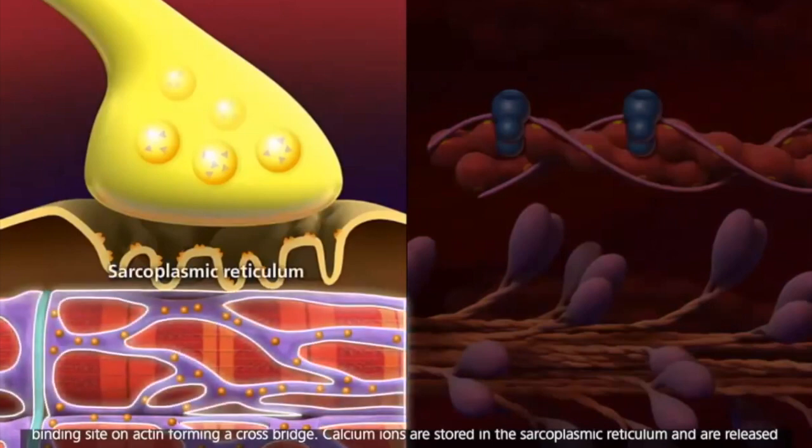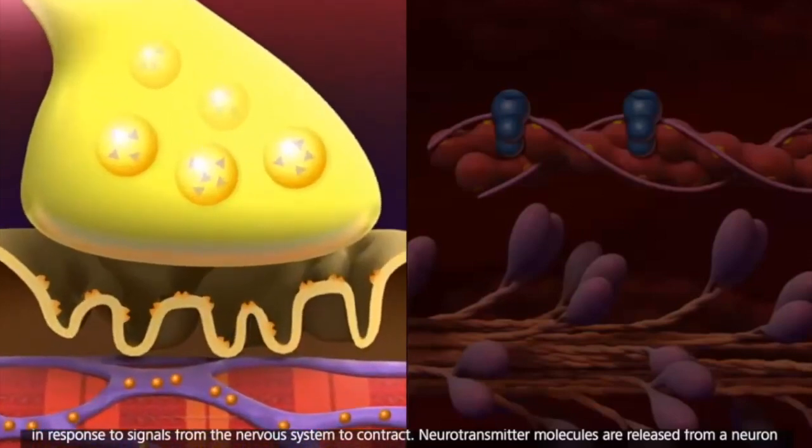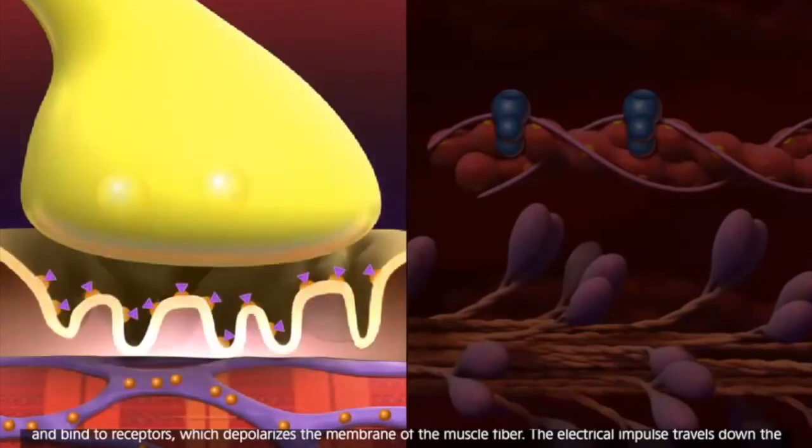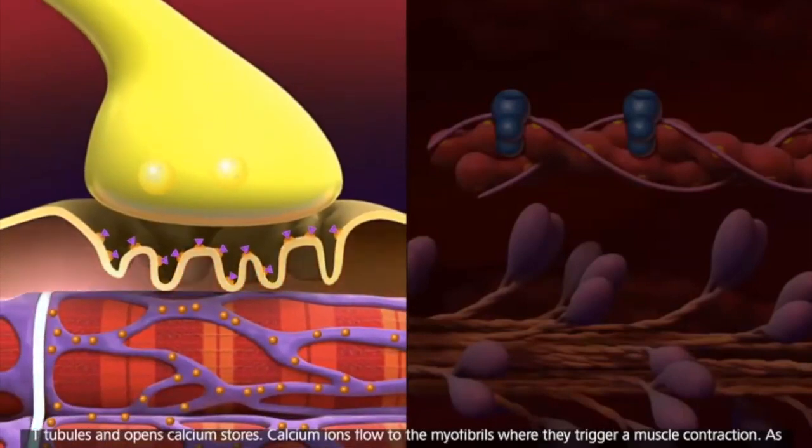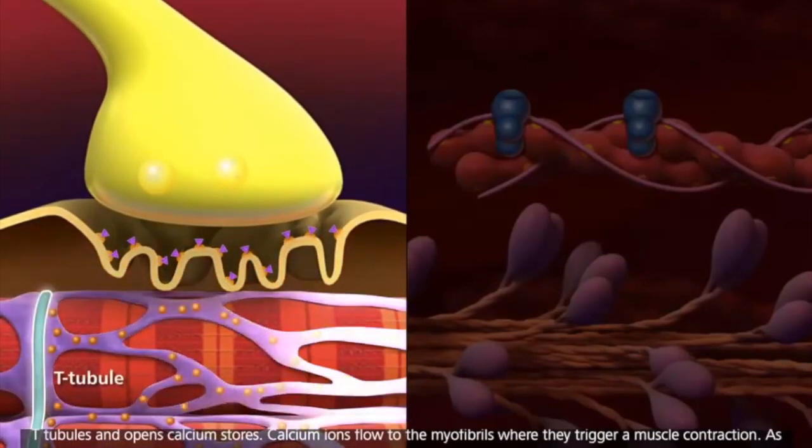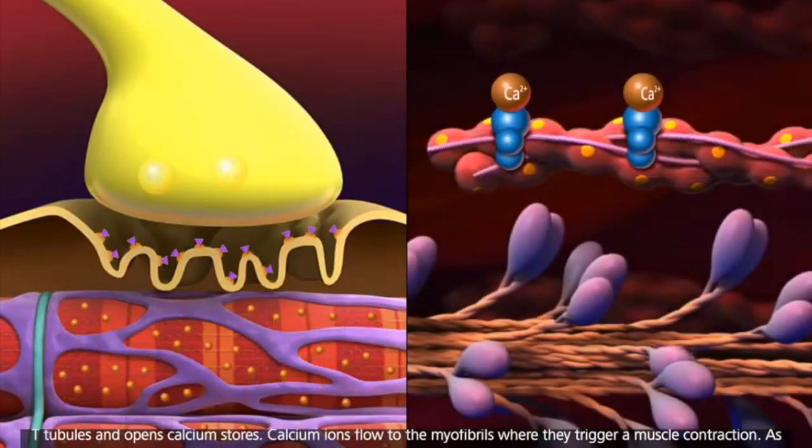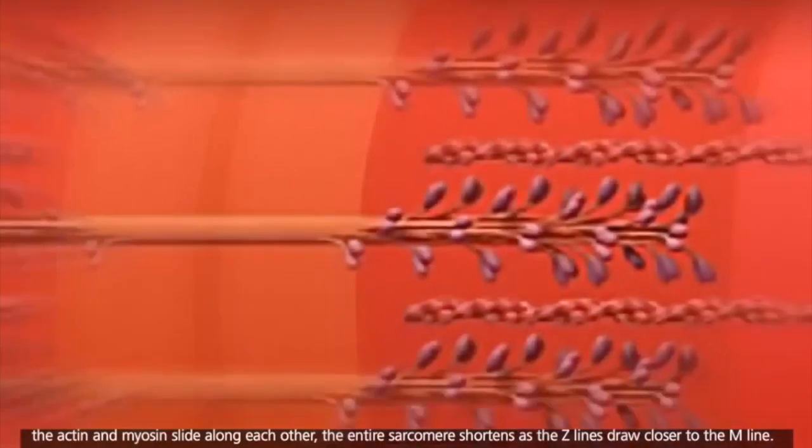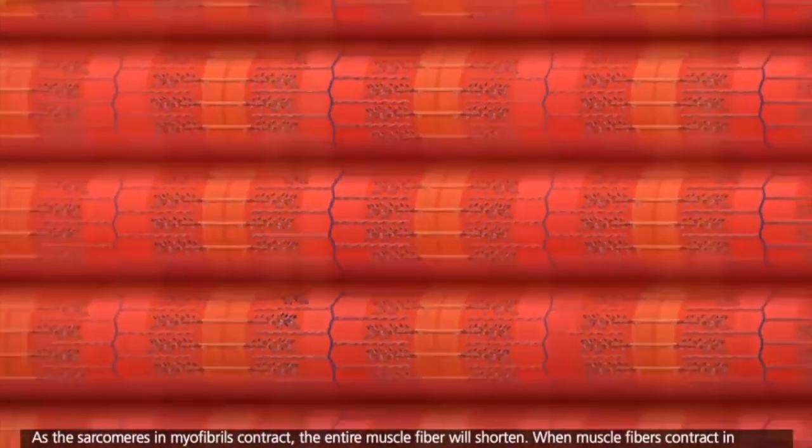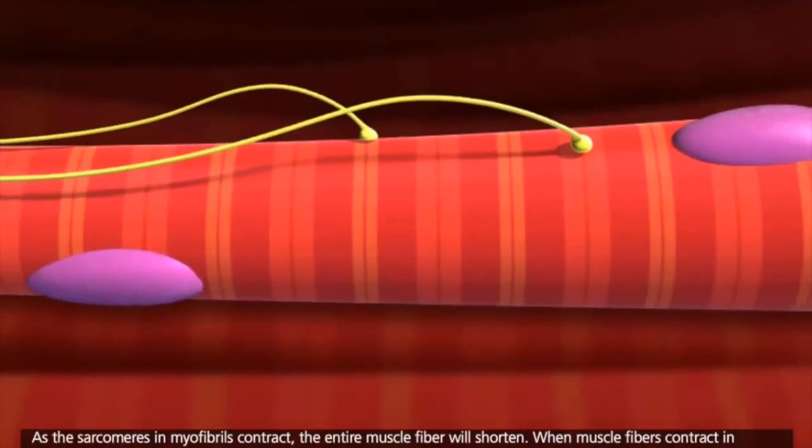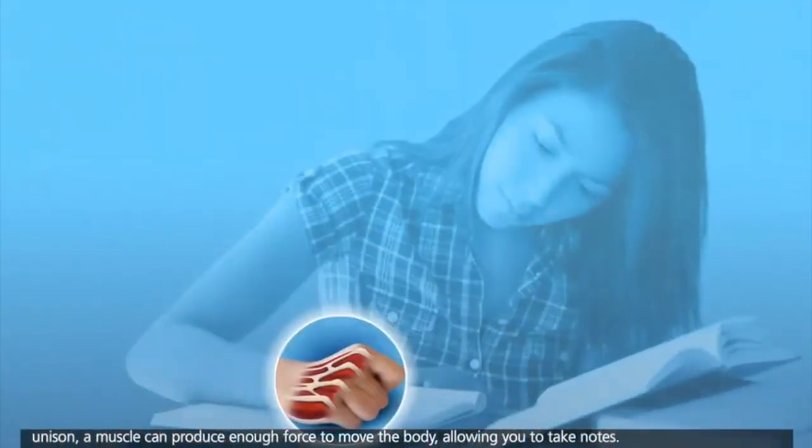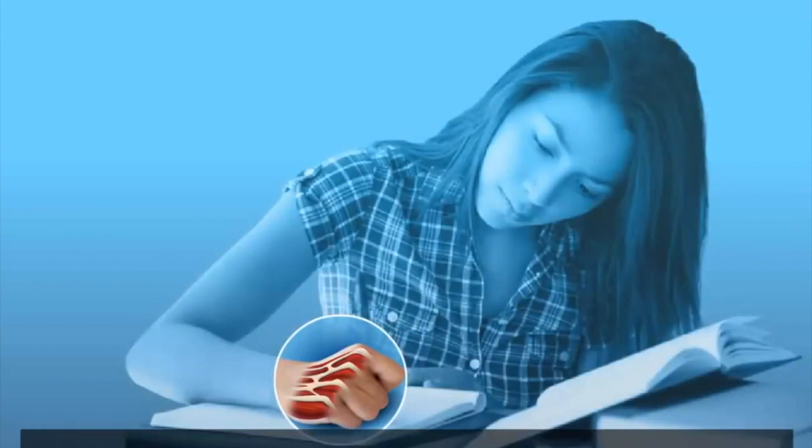Calcium ions are stored in the sarcoplasmic reticulum and are released in response to signals from the nervous system to contract. Neurotransmitter molecules are released from a neuron and bind to receptors, which depolarizes the membrane of the muscle fiber. The electrical impulse travels down the T-tubules and opens calcium stores. Calcium ions flow to the myofibrils, where they trigger a muscle contraction. As the actin and myosin slide along each other, the entire sarcomere shortens as the Z lines draw closer to the M line. As the sarcomeres in myofibrils contract, the entire muscle fiber will shorten. When muscle fibers contract in unison, a muscle can produce enough force to move the body, allowing you to take notes.